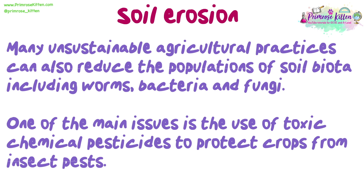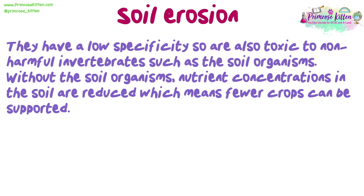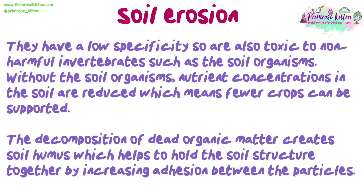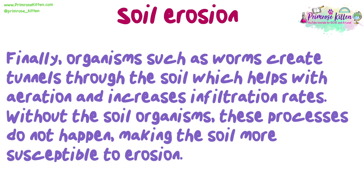One of the main issues is the use of toxic chemical pesticides to protect crops from insect pests. They have a low specificity, so are also toxic to non-harmful invertebrates such as soil organisms. Without the soil organisms, nutrient concentrations in the soil are reduced, which means fewer crops can be supported. The decomposition of dead organic matter creates soil humus, which helps to hold the soil structure together by increasing adhesion between the particles. Finally, organisms such as worms create tunnels through the soil, which helps with aeration and increases infiltration rates. Without the soil organisms, these processes do not happen, making the soil more susceptible to erosion.